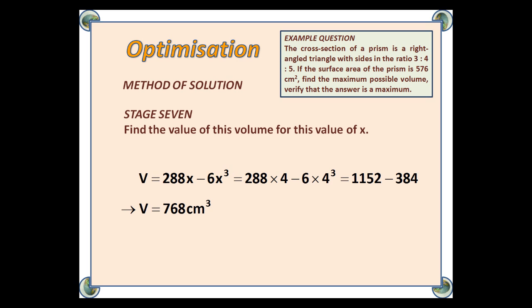Stage 7: Find the value of this volume for this value of x. So, we take our value of x of 4, we substitute that into our volume formula, and we get 768 centimeters cubed.